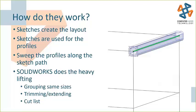Behind the scenes, SOLIDWORKS basically creates a sweep — puts your profile on your path and sweeps it from point A to point B. SOLIDWORKS is doing all the heavy lifting: grouping same-size members, automatically trimming where we want it to, and keeping track of the cut list. It's dedicated functionality that's highly automated and allows us to build some pretty neat things.